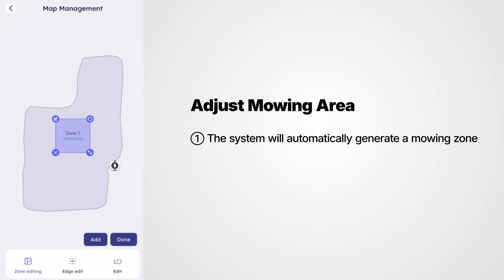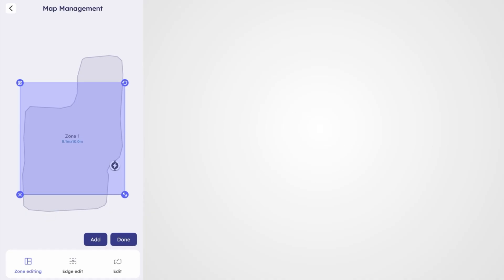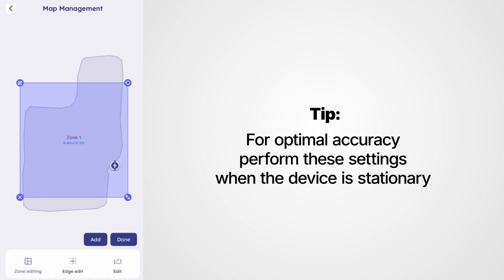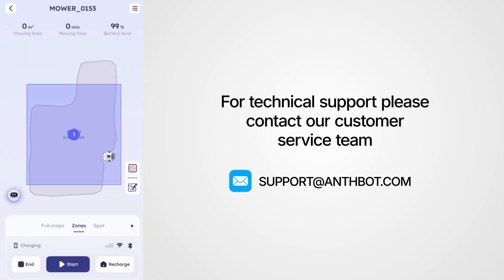The system will automatically generate a mowing zone. Resize the area by dragging the Expansion icon at the bottom right corner. For optimal accuracy, perform these settings when the device is stationary. For technical support, please contact our customer service team.